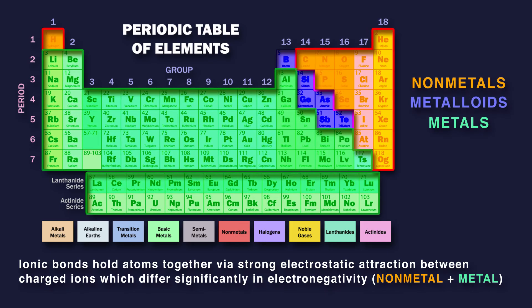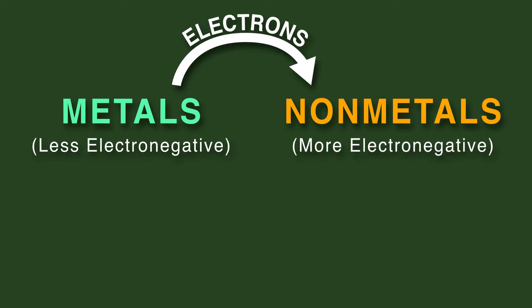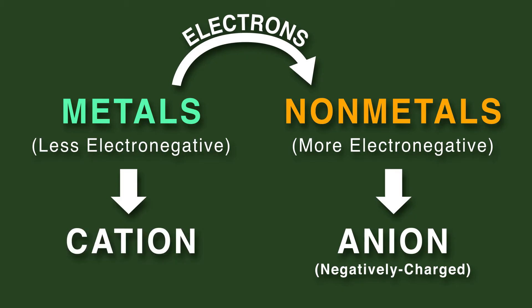Ionic bonds hold atoms together via strong electrostatic attraction between charged ions which differ significantly in electronegativity. As a result, the less electronegative ion transfers electrons to the more electronegative ion. The result is an anion with a negative charge and a cation with a positive charge. These opposite charges attract to form a molecule.